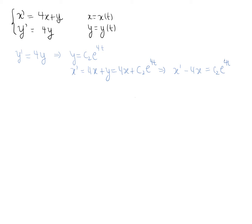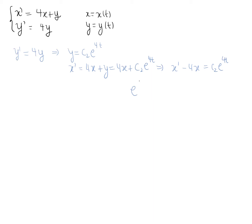That is a first-order linear equation, so we can use the integrating factor to find x. When using the integrating factor, we want the exponential of whatever coefficient is beside x, integrated with respect to t. In this case we have minus 4, so integrating gives us the integrating factor e to the minus 4t. Once we find the integrating factor, the derivative of e to the minus 4t times x equals e to the minus 4t times the right-hand side of the equation.